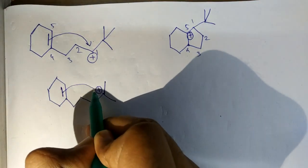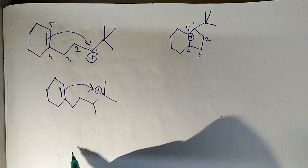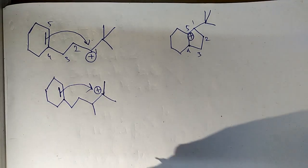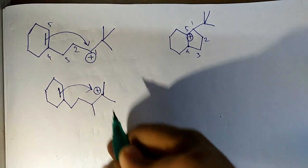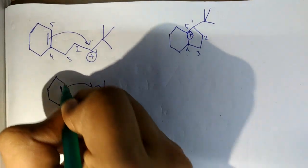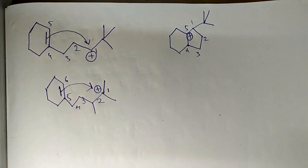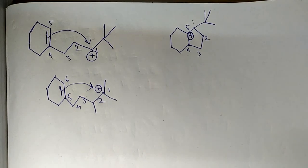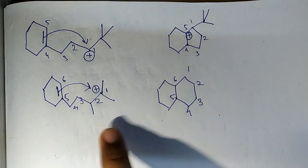What will happen if the pi bond is donated to this carbon atom? I named it one, two, three, four, five, six. So in total, a six-member ring is formed.